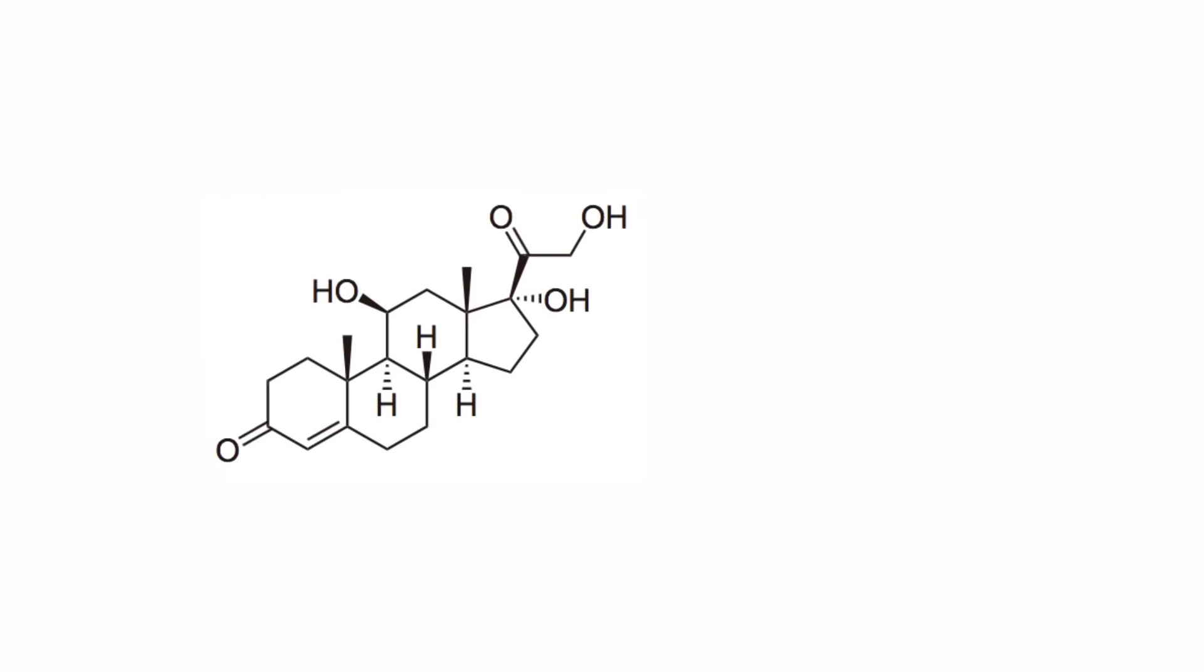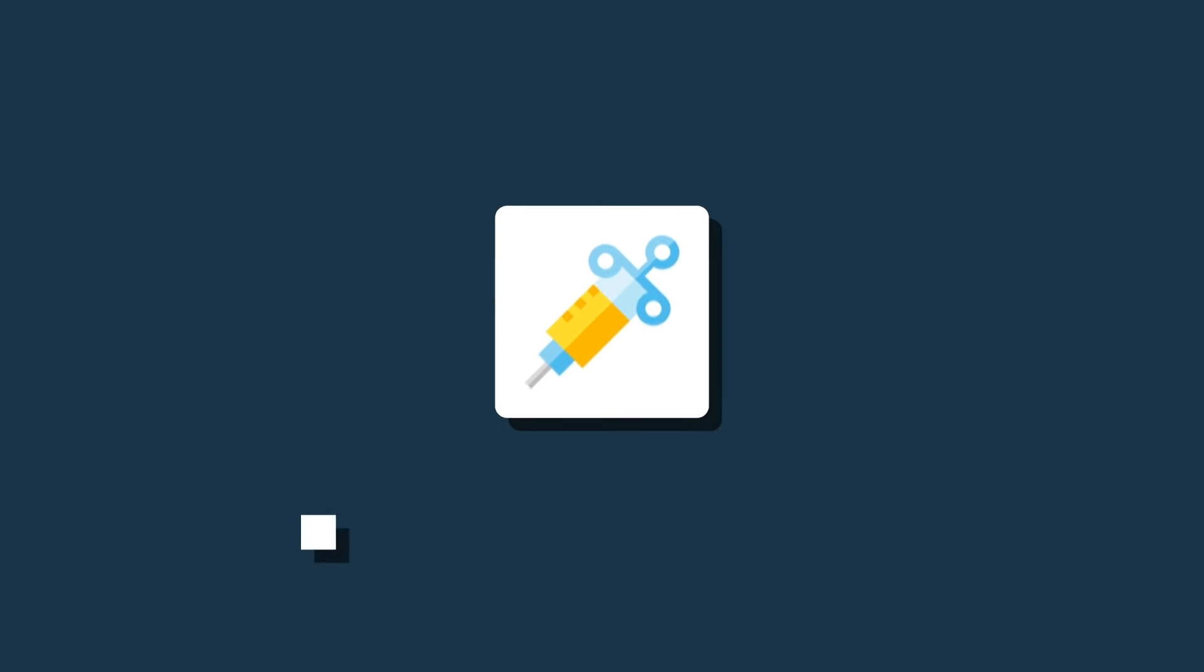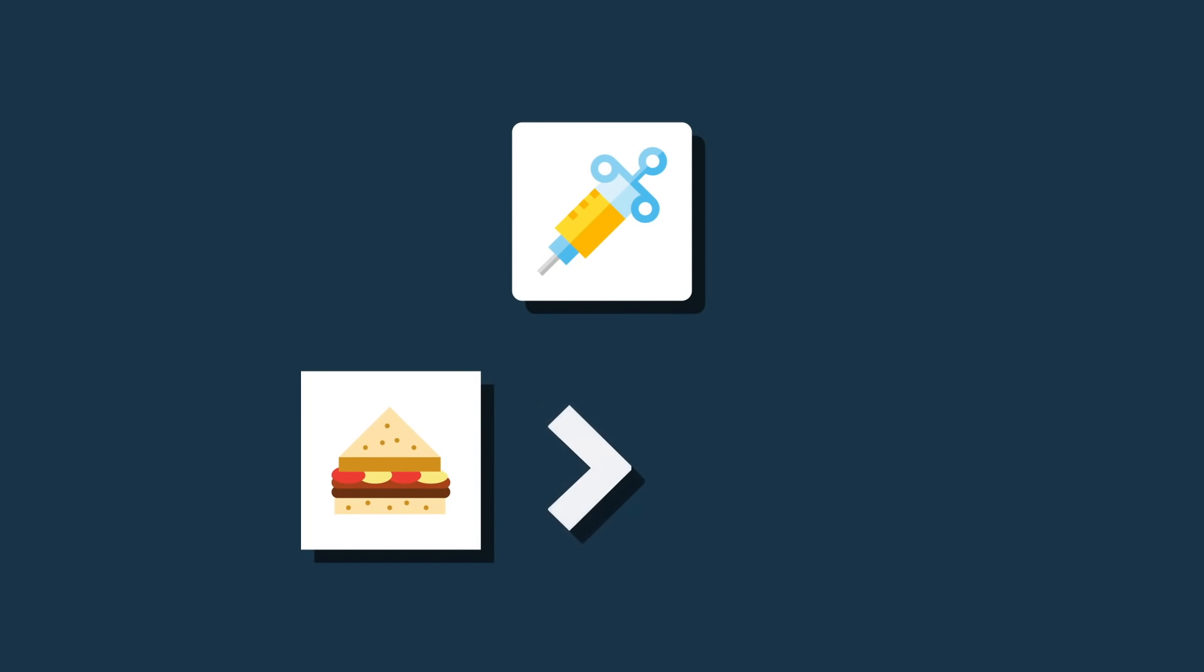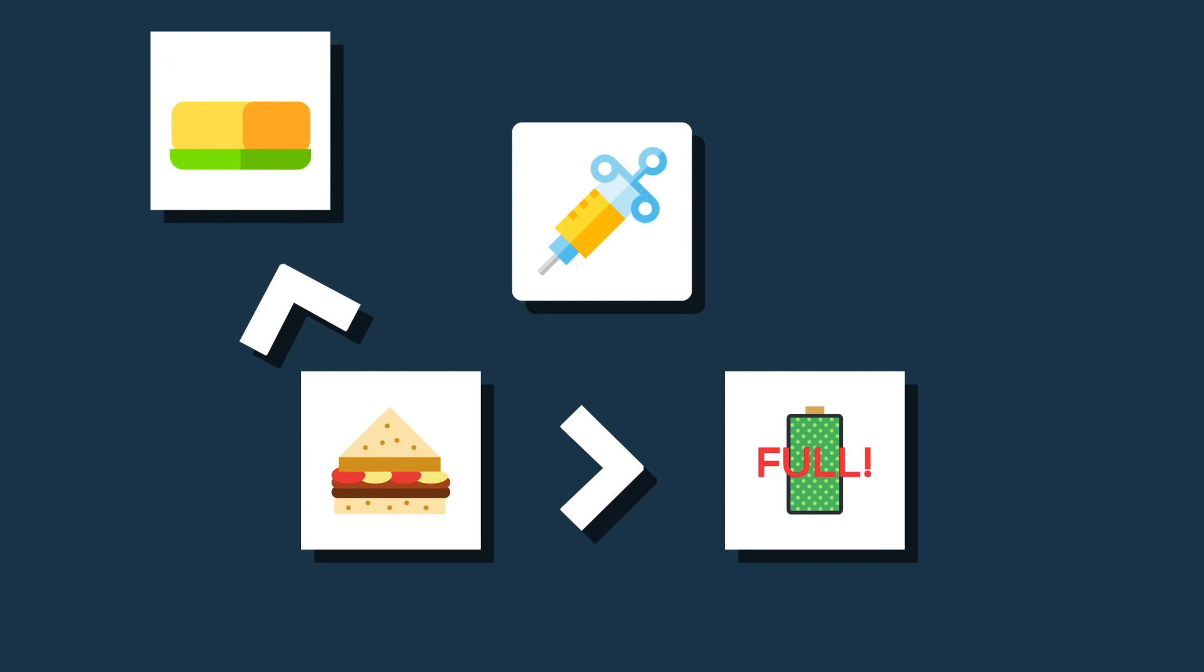It also lets your glucagon do its job finally. You probably have heard of insulin. It helps to store the food you eat as glycogen in your body, so it goes up every time you eat. And when there is enough glycogen, the incoming food will be stored as fat.